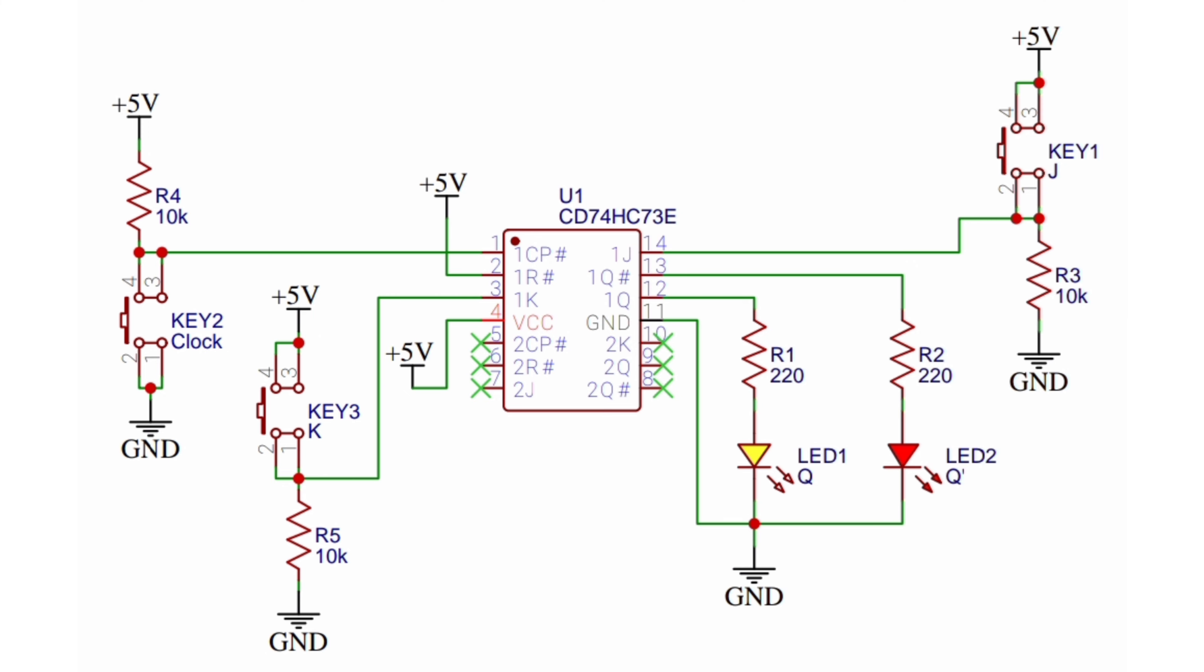And the red LED will show the inverted Q output. If you want to use both JK flip-flops of this IC, then you can use the second JK flip-flop. You just need to connect push switches and resistors to the second JK flip-flop similar to the first JK flip-flop.